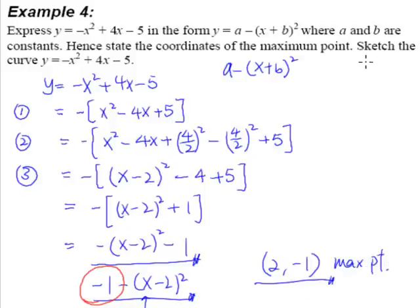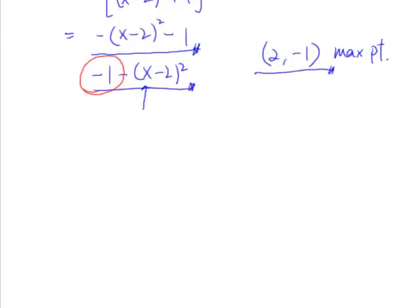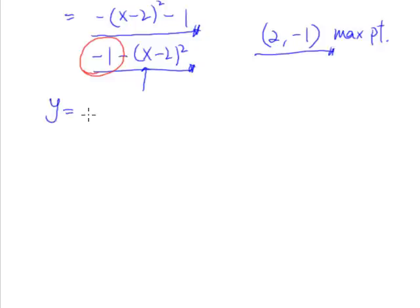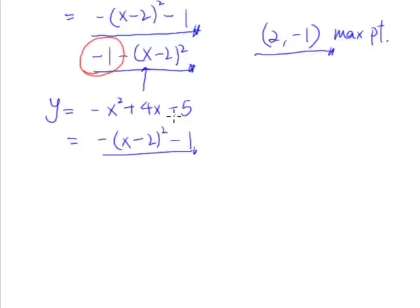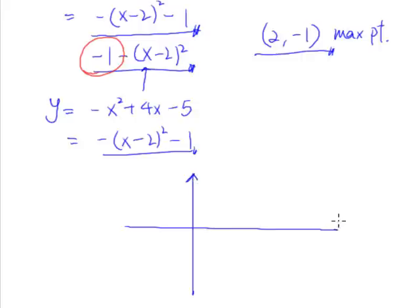Let's take a look at the next part of the question: sketch the curve. We are now supposed to sketch this quadratic curve. Let us copy the equation one more time: y is equal to negative x squared plus 4x minus 5. We have completed the square such that it becomes this form — they are the same; when you expand out, you get the same thing. We also figured out that our maximum point is at 2, negative 1. Let us try to sketch the curve by first sketching the axis.